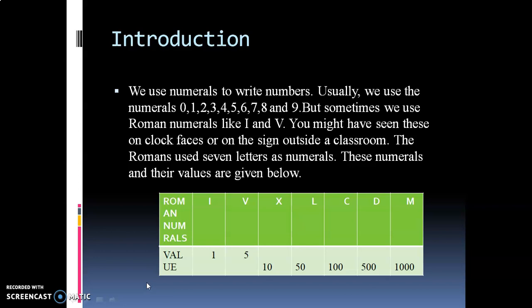We use numerals to write numbers. Usually we use the numerals 0, 1, 2, 3, 4, 5, 6, 7, 8, and 9. But sometimes we use Roman numerals like I and V. You might have seen these on clock faces or on the sign outside a classroom.